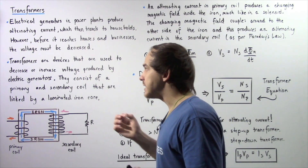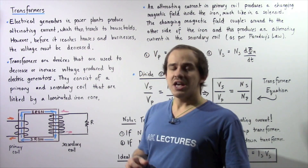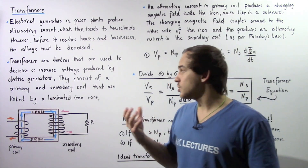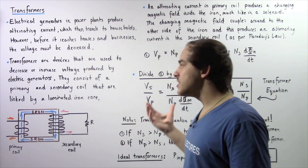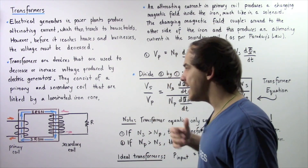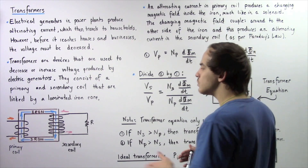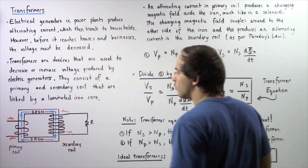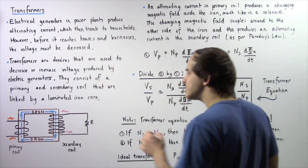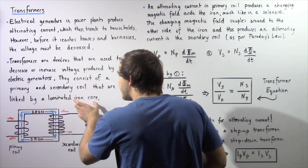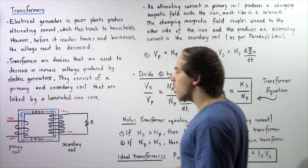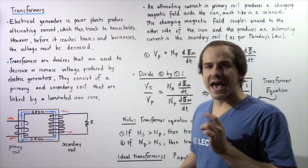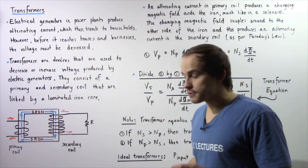Transformers consist of a primary and a secondary coil that are linked by a laminated iron core, as shown in the following diagram. The reason we laminate the iron core is to reduce eddy currents.